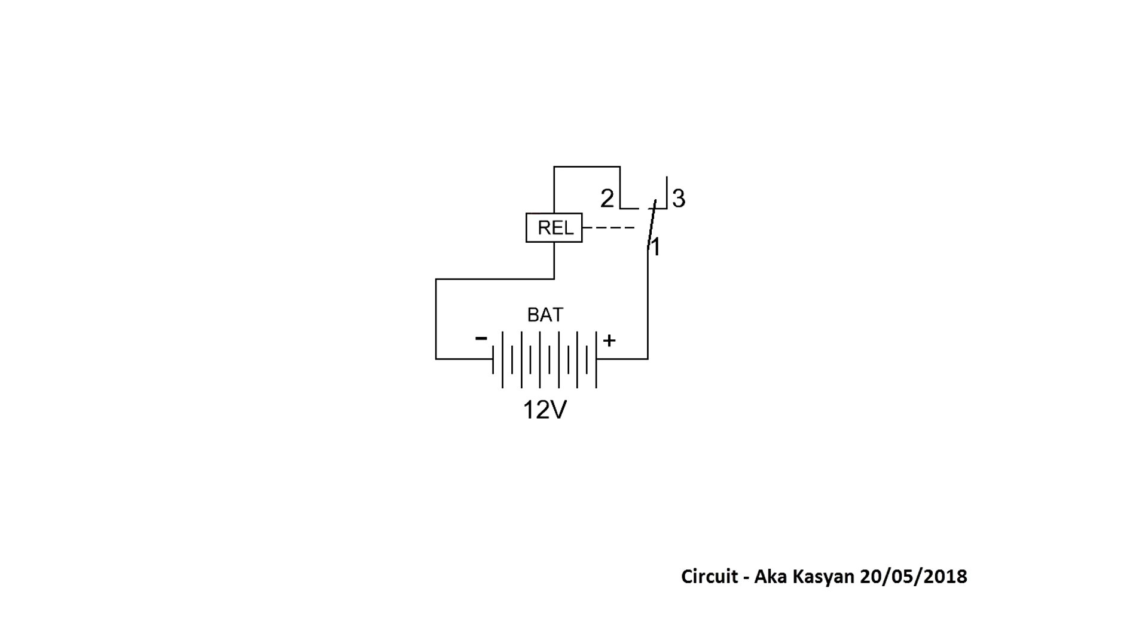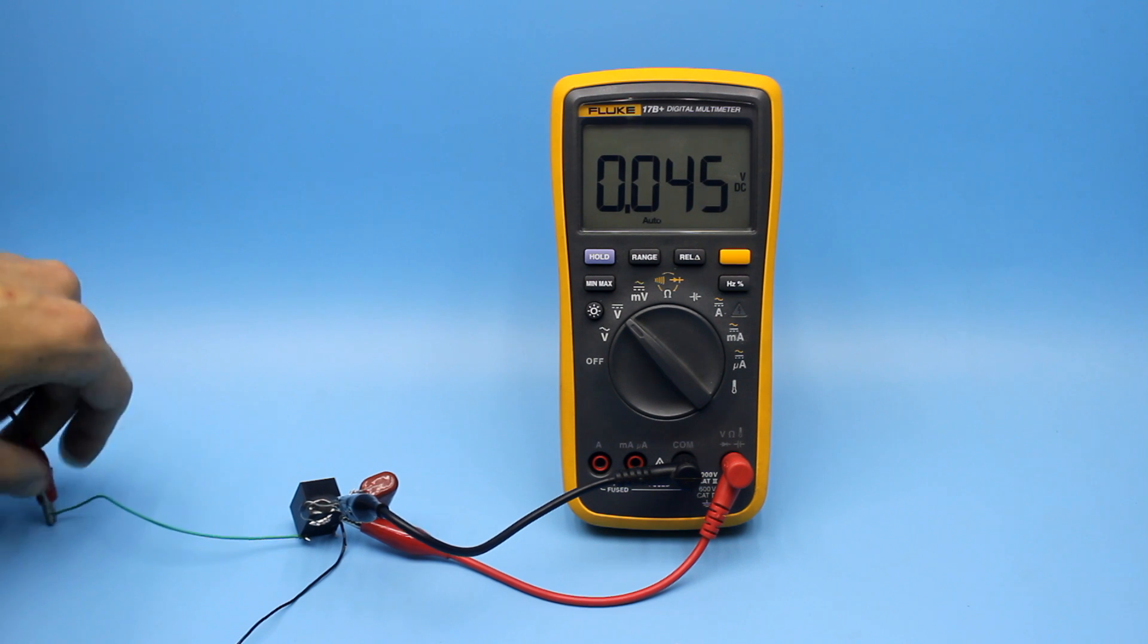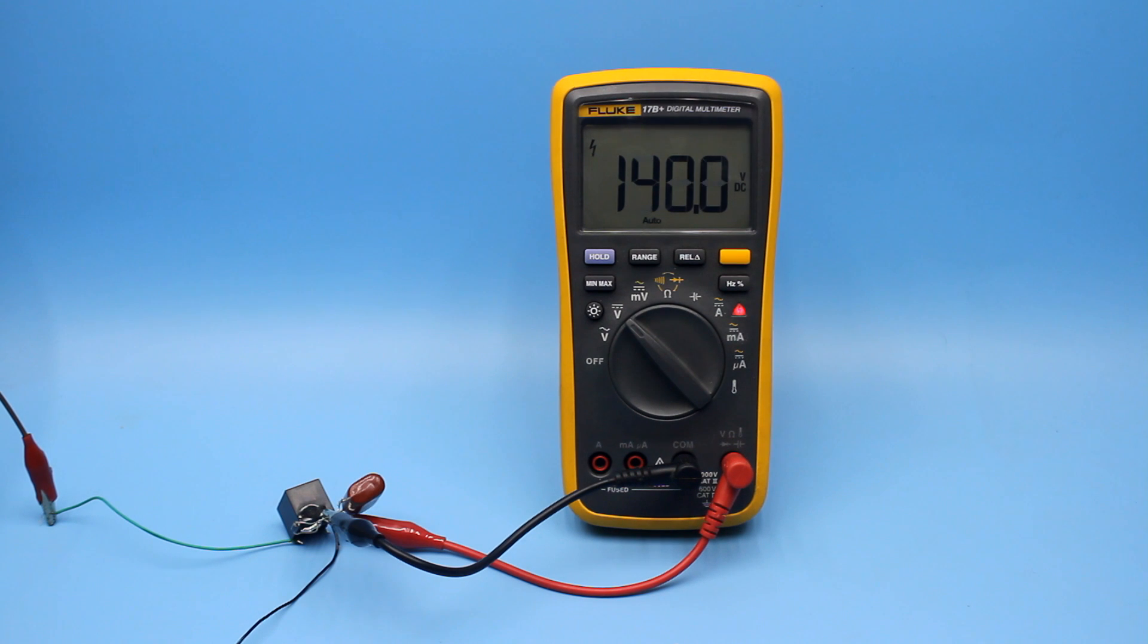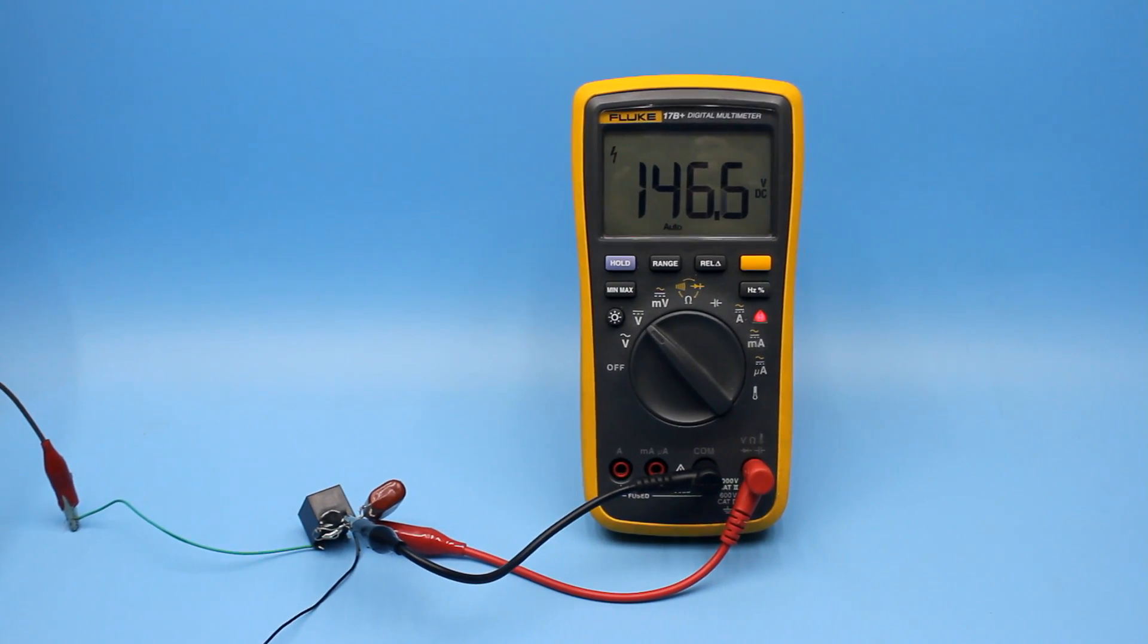When the supply of circuit disconnects, the solenoid gives up the accumulated energy, and the self-induction EMF is much higher than the supply voltage. Even powered by a 9V battery, the self-induction voltage from the solenoid is up to several tens or even hundreds of volts. But don't be afraid, it isn't dangerous. However, getting an unpleasant electric shock is still possible.